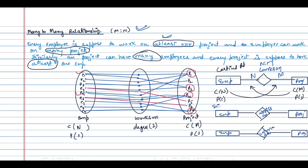In the single-line double-line representation, the participation of both employee and project is one, meaning both sides are in total participation, so both sides use double lines. In the min-max representation, the minimum cardinality of employee is 1 and maximum is N; the minimum cardinality of project is 1 and maximum is M. This is the many-to-many relationship.